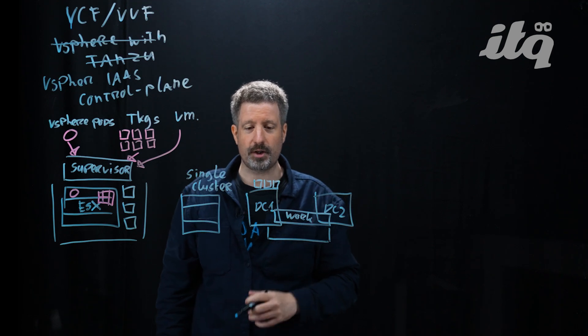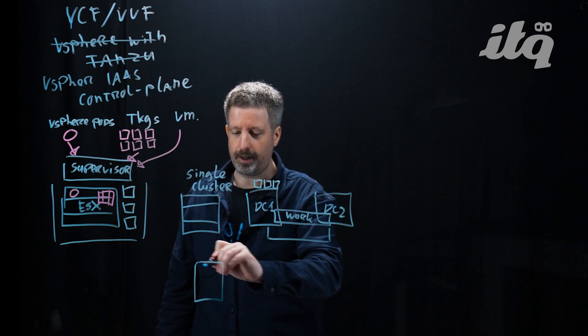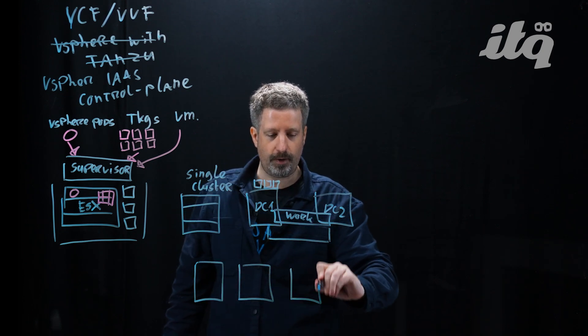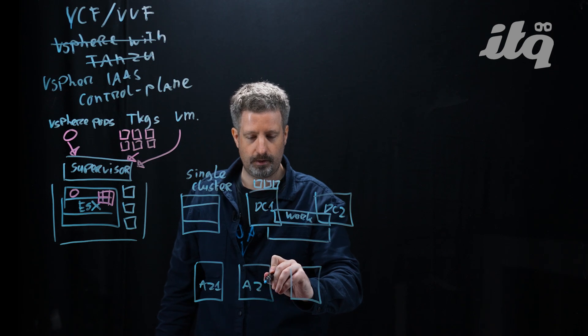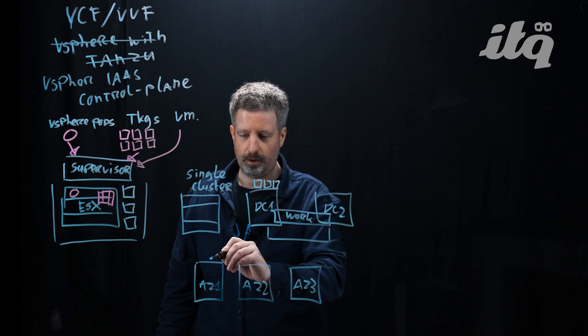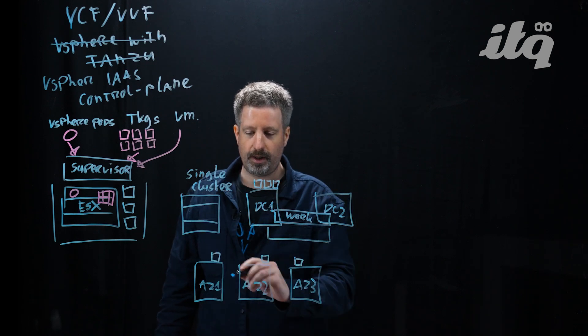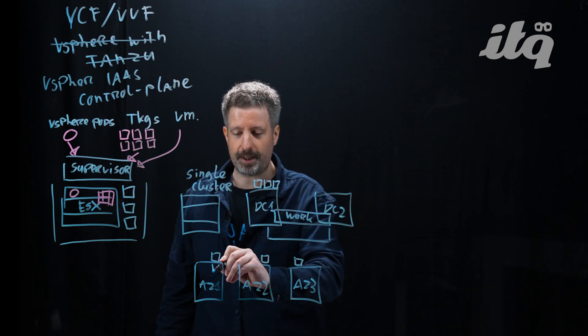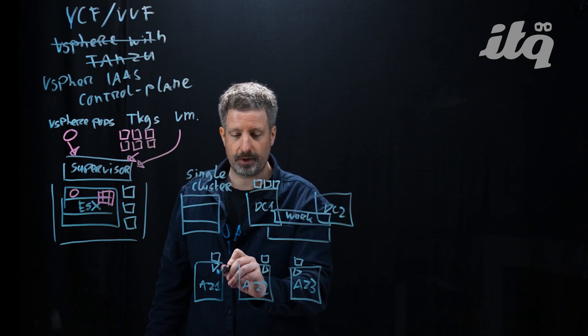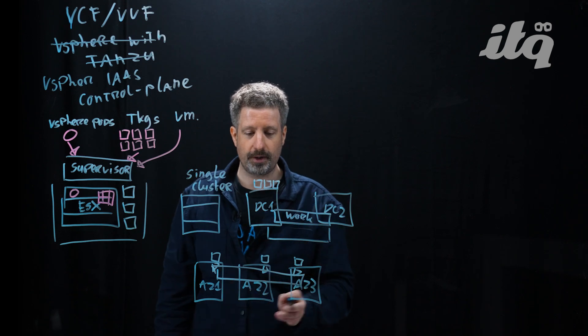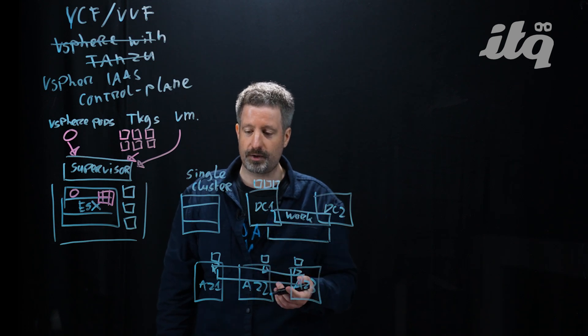And then finally, and this is probably the most resilient deployment model that's offered, is you can have what they call a zonal deployment. If you have three data centers or three availability zones, the supervisor control plane is automatically stretched across all three locations. And for every Kubernetes cluster you deploy, the control plane for each Kubernetes cluster is also deployed automatically across three locations. And of course, all workloads are then also stretched across the three locations. This deployment mode in particular is most similar to what you could expect from a public cloud, such as AWS or Azure.